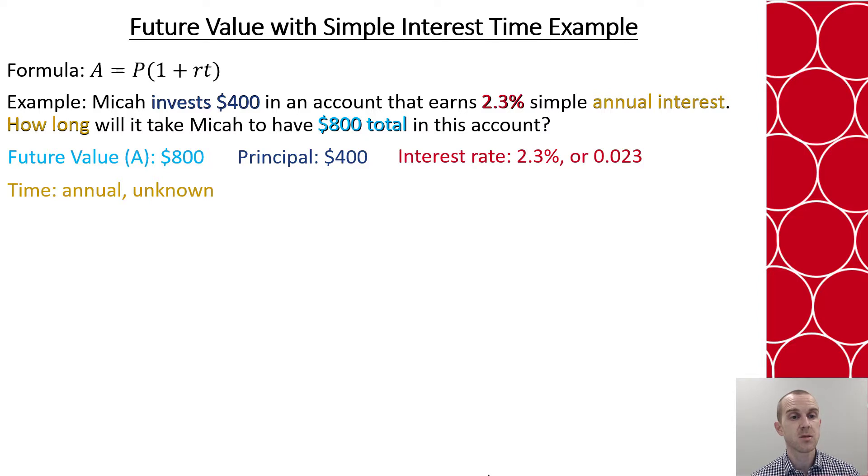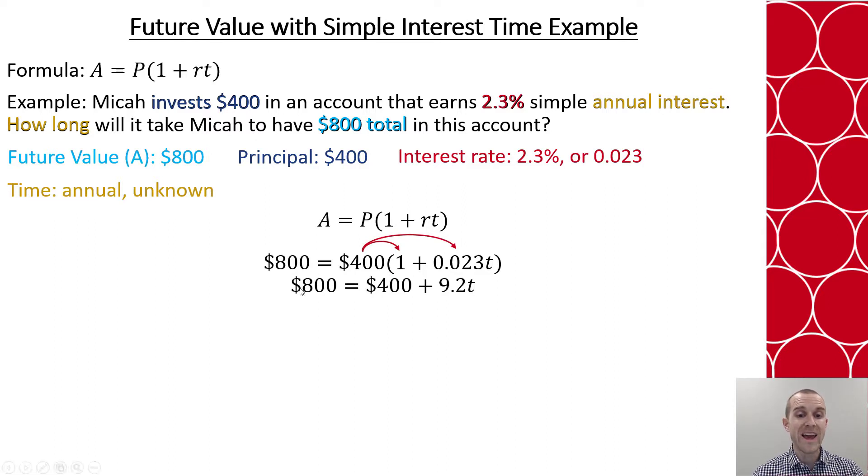So now we substitute in what we have into the formula. So we're going to put 800 equals 400 times the quantity 1 plus .023t. Now there's a couple different ways that we could follow solving this equation, but the most common is to first distribute the $400 back through.